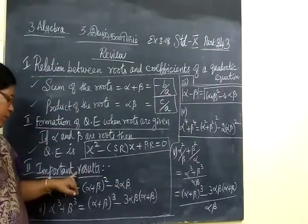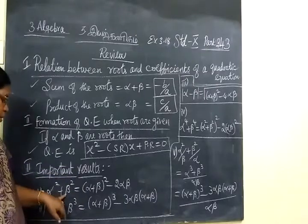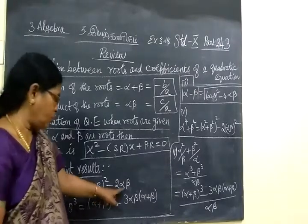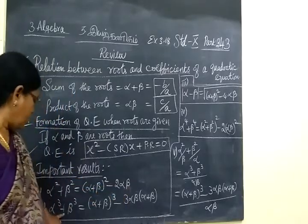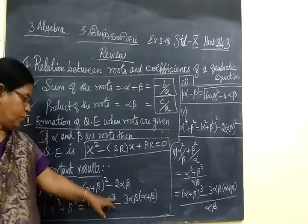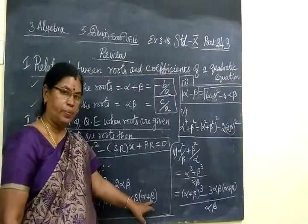We must know some important results: α² + β² = (α + β)² − 2αβ. Then α³ + β³ = (α + β)³ − 3αβ(α + β).